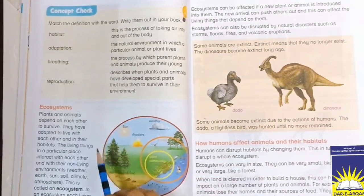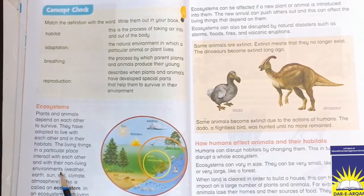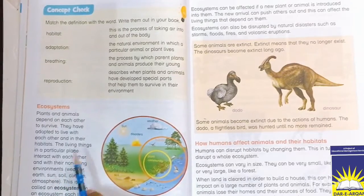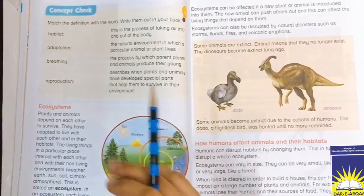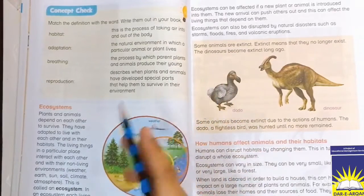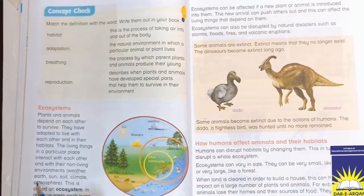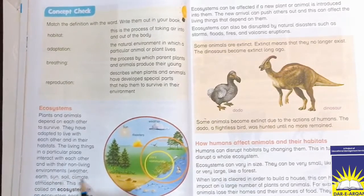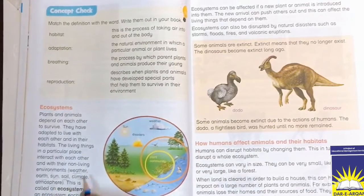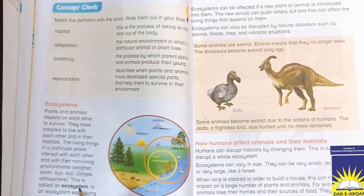Living things in a particular place interact with each other and their non-living environment. Living things interact with non-living things like the environment, weather, Earth, Sun, Soil, Climate, and Atmosphere. These things require adaptation — this is called an ecosystem.